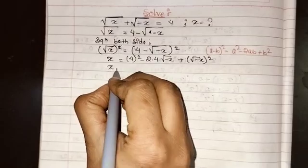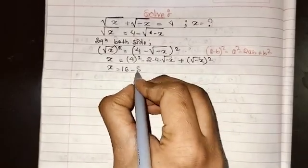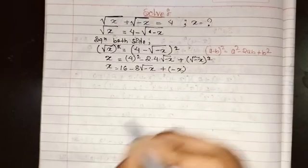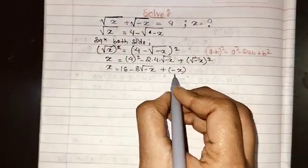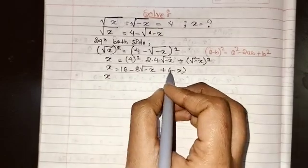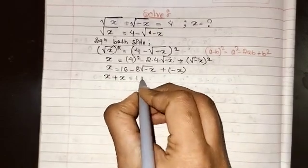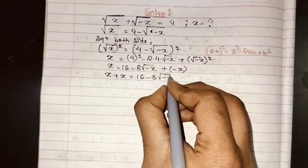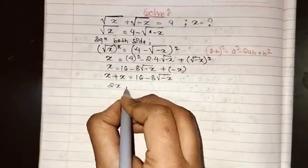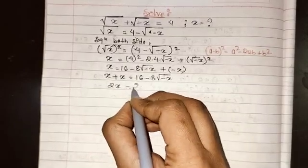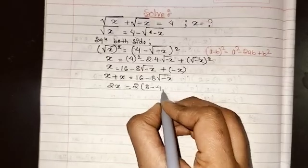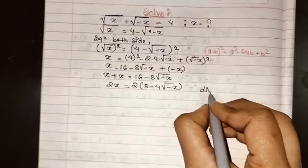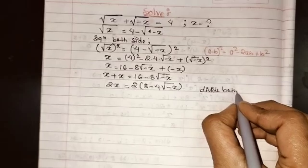So we have x = 16 - 8√(-x) + (-x). The √(-x) squared gives -x. Bringing the -x to the left side gives x + x = 2x, so 2x = 16 - 8√(-x). We can factor out 2 from the right side, giving 2x = 2(8 - 4√(-x)).